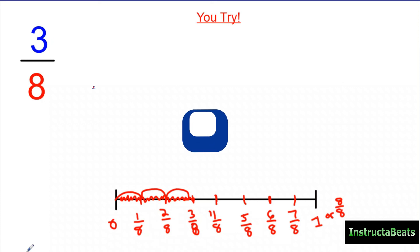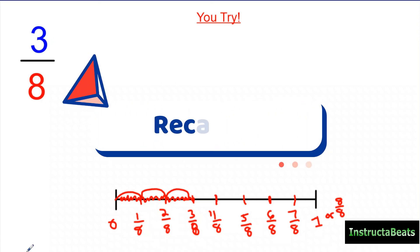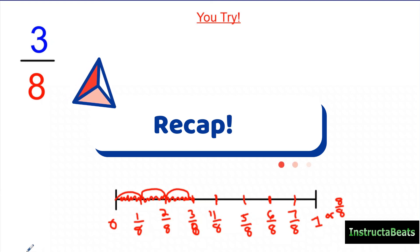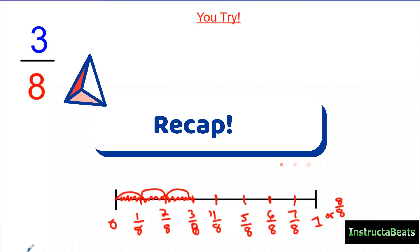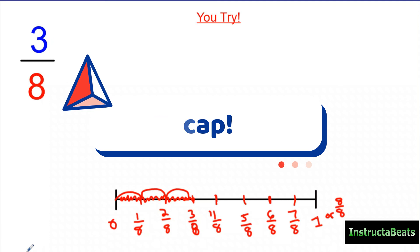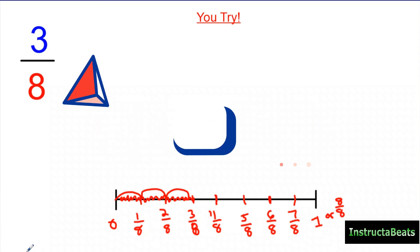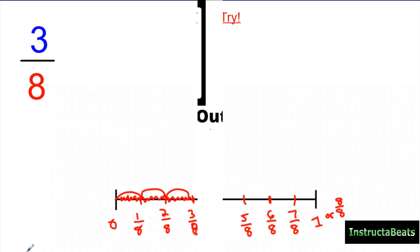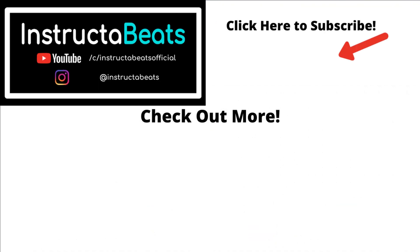Hopefully we reviewed what a fraction was for you, showed you how to put it on an area model, and focused on putting it on a number line to represent that fraction. Fractions have to be equal groups — you can do them on an area model or a number line; it's the exact same thing, just a different way to look at it. We appreciate you checking us out, and we hope that you'll like, comment, subscribe. Let us know where you're watching from. Instruct Beats, out.